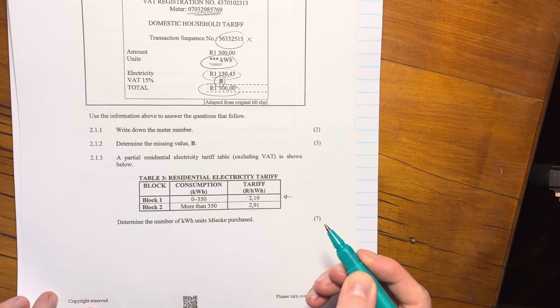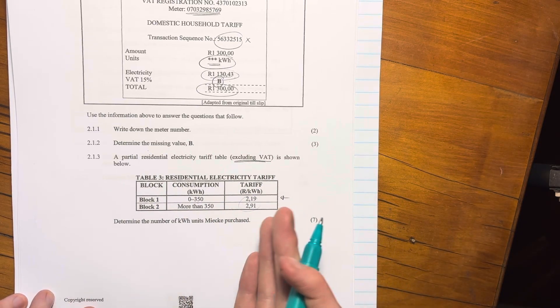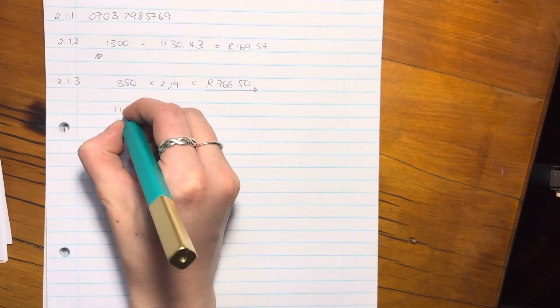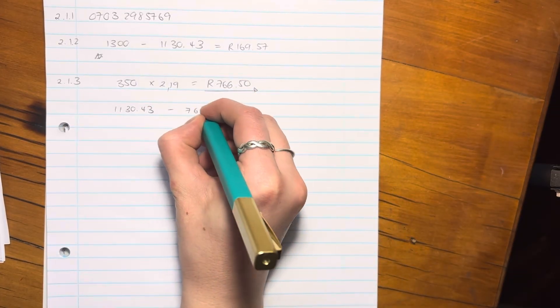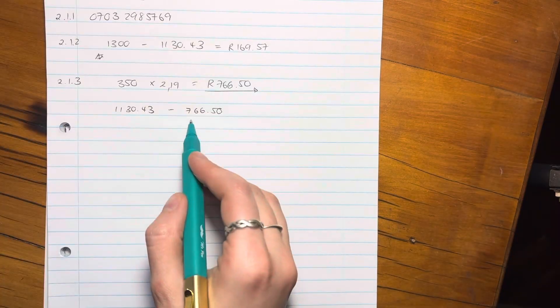Remember the VAT is applied at the end. This is not including VAT. Okay. And it specifically says they're excluding VAT. So just be careful with the number that you're working with. So we know that she paid 1,130.43 in total for electricity. And the amount that she paid in that first block, right, in this first block 1 is going to be that much.